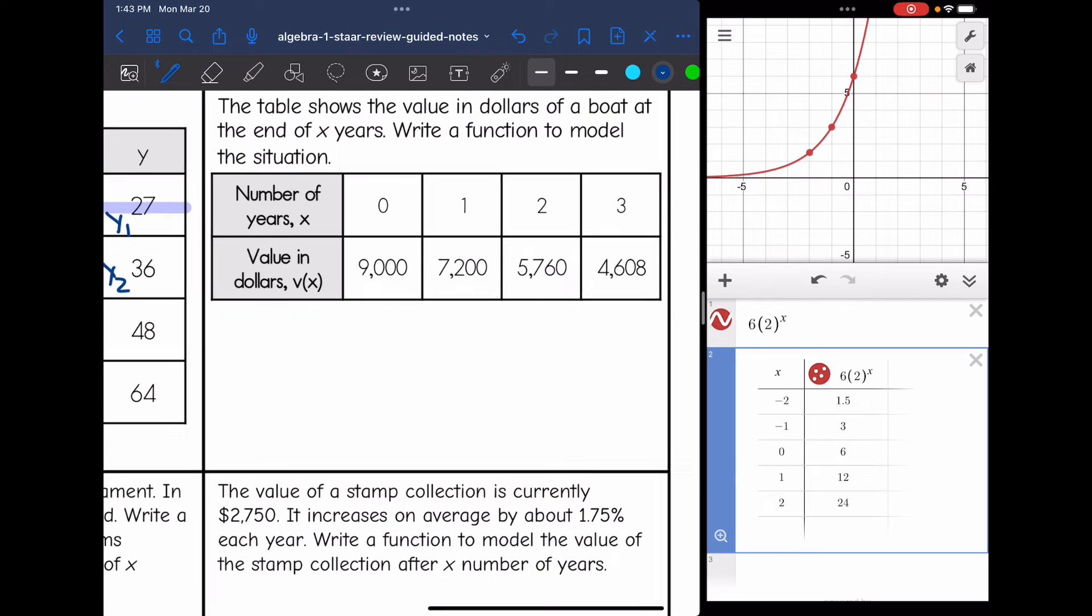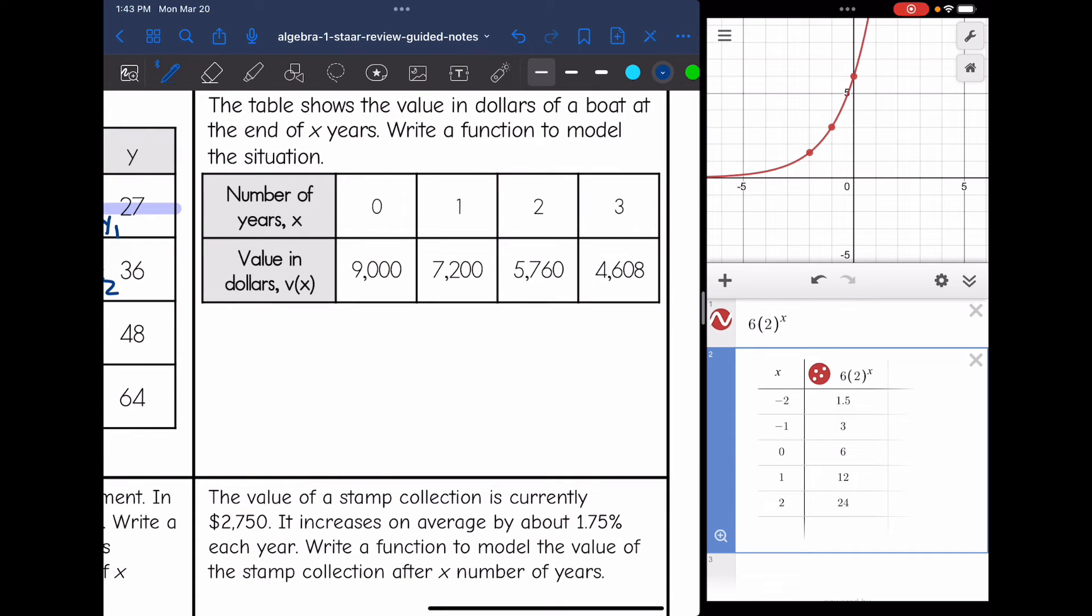Okay, next one, it says the table shows the value in dollars of a boat at the end of x years, write a function to model this situation. So I need two things to model this situation, I need a, my y-intercept, which I can see right here, it's 9000.